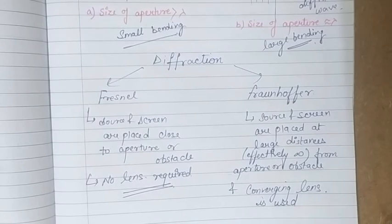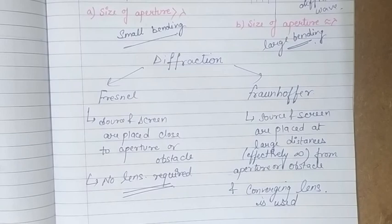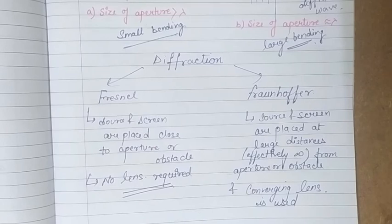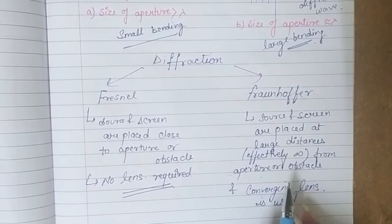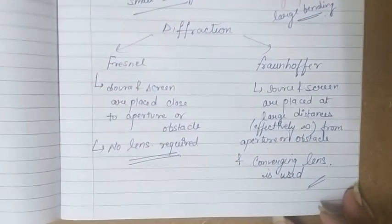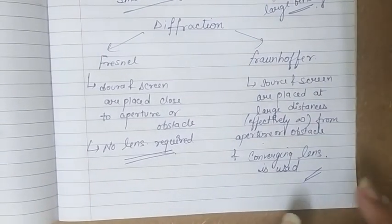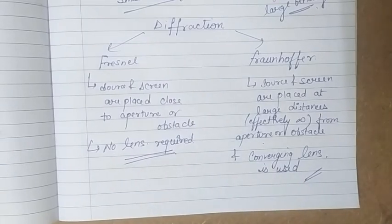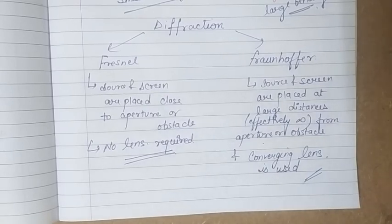In case of Fraunhofer diffraction, the source and screen are placed at large distances — effectively equivalent to infinity — from the aperture or obstacle. Since they are at a very large distance, the light rays don't converge on the screen by themselves, so we have to use a converging lens to observe diffraction. In Fraunhofer diffraction, a convex lens is used to observe the diffraction effectively on the screen.